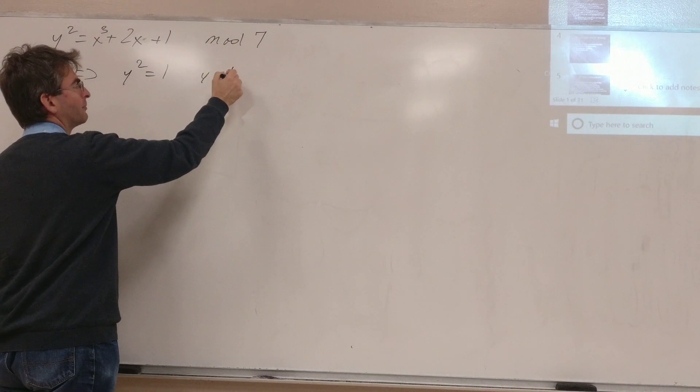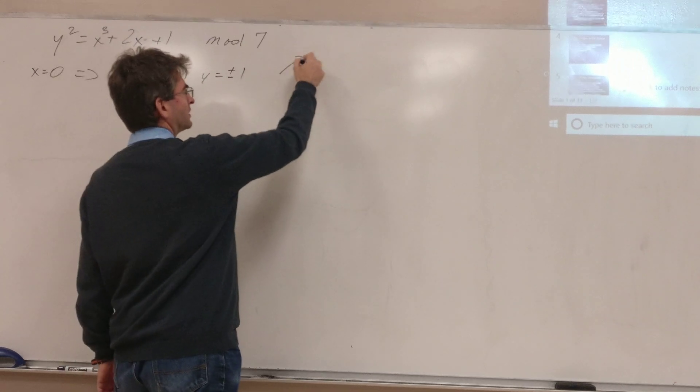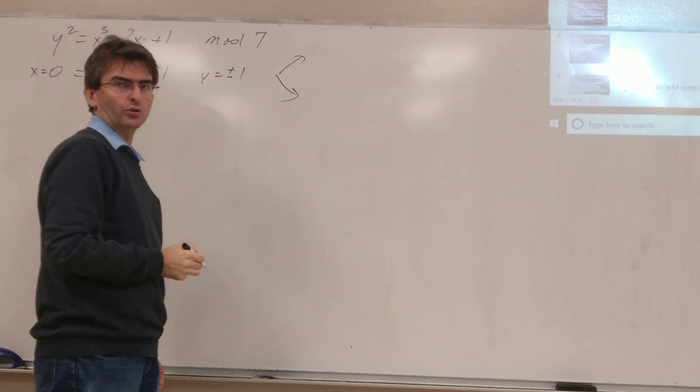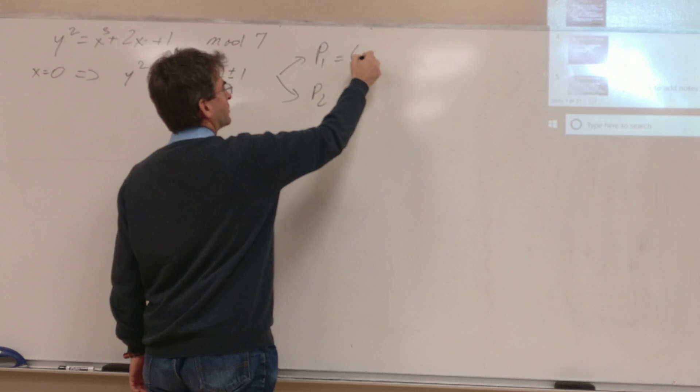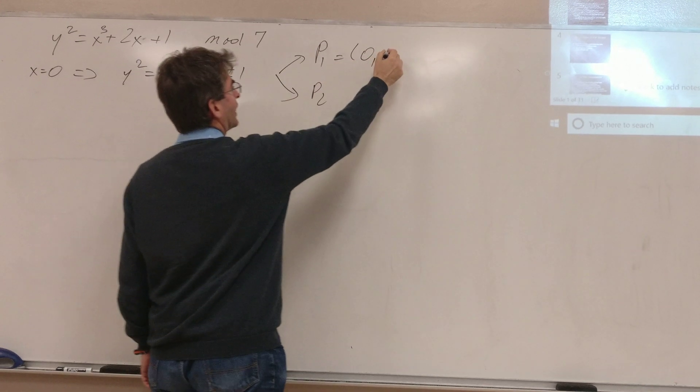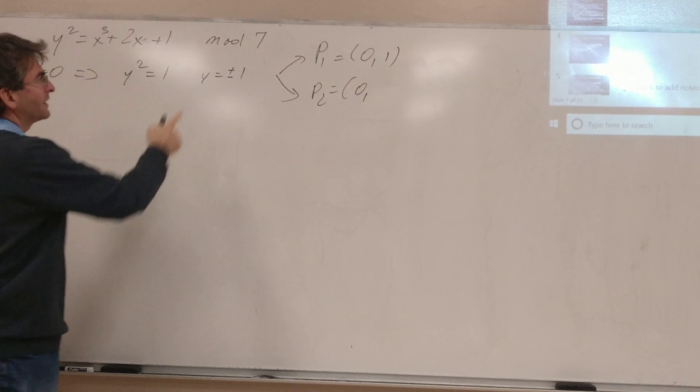Then you get y squared equals 1, so we have y equals plus or minus 1. So you have two possible points at coordinate 0, namely p1 equals (0,1) and p2 equals (0, minus 1), which is (0,6).